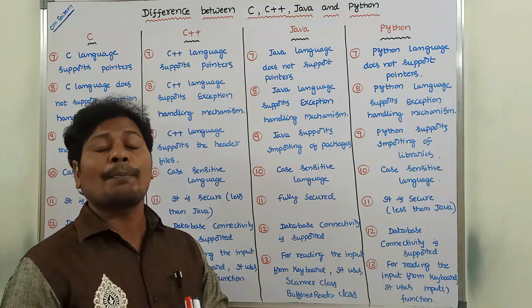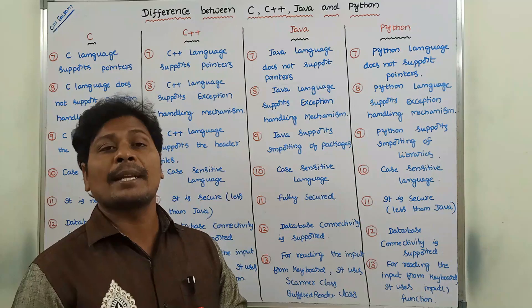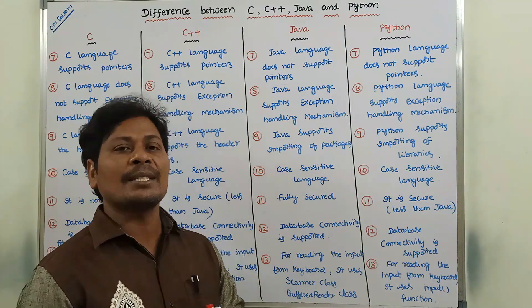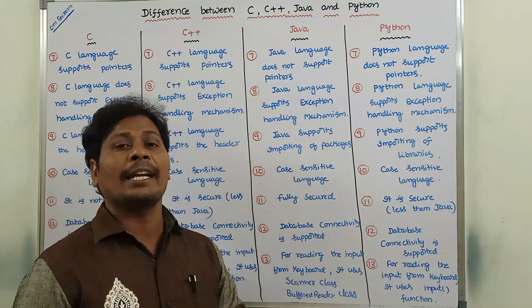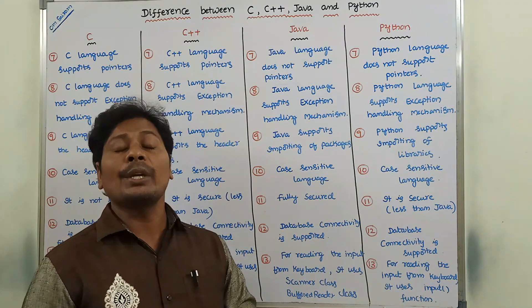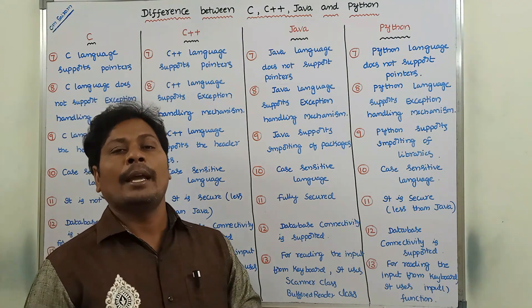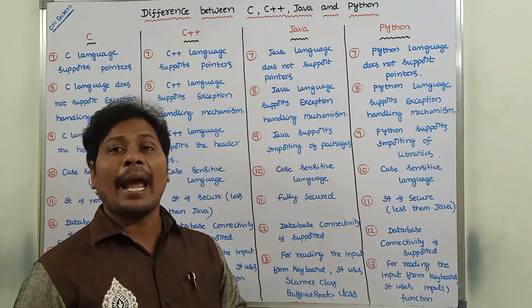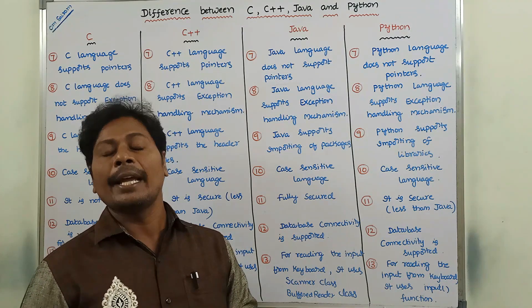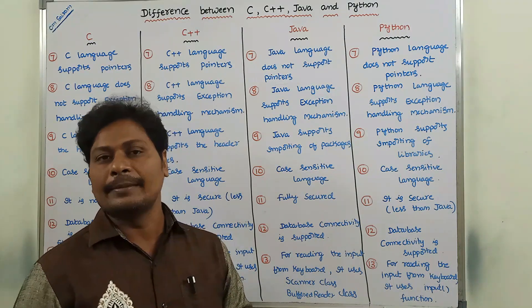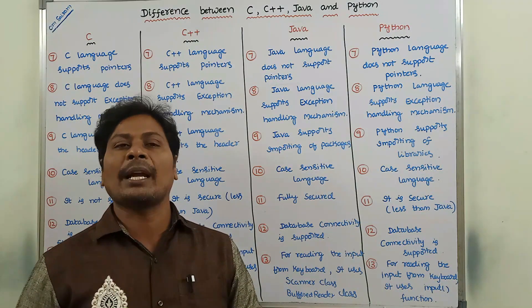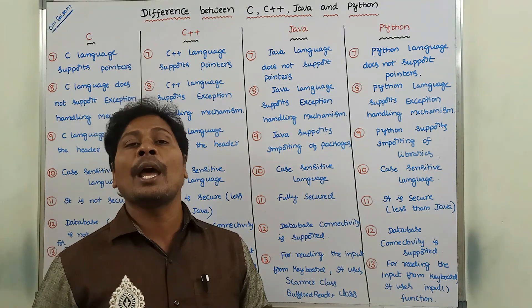Next point: C language does not support exception handling mechanism. C++ language supports exception handling. Java language supports exception handling. Python language also supports exception handling. If any error is occurred, to handle that error we use exception handling mechanism. In exception handling, a try block is where an exception is generated, a catch block is where it is handled, and a finally block also exists. So only C++, Java and Python support exception handling, whereas C does not.